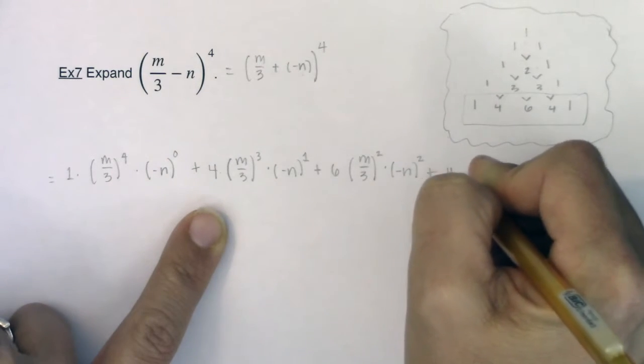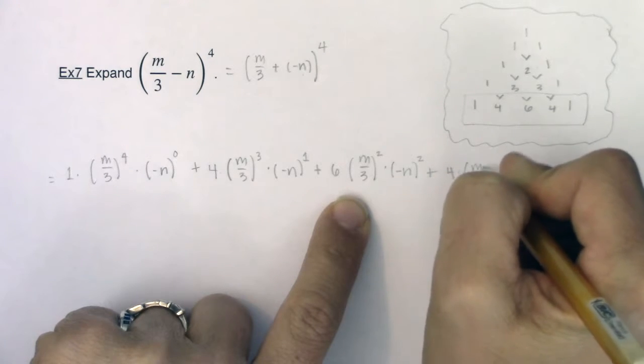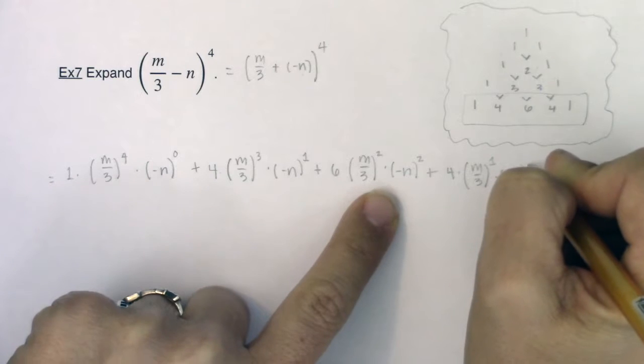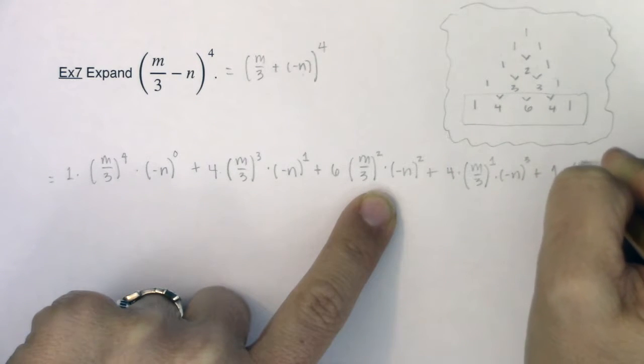My next coefficient is a 4. We're now looking at m over 3 to the first power and negative n to the third power. And then last but not least, we have a 1. I've got m over 3 to the zeroth power and negative n to the fourth.